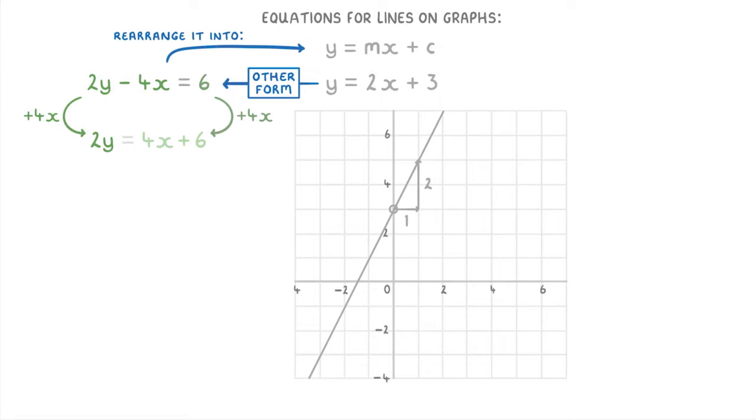To do this, we'd just add 4x to both sides to get 2y equals 4x plus 6, and then divide both sides by 2 to get y equals 2x plus 3.